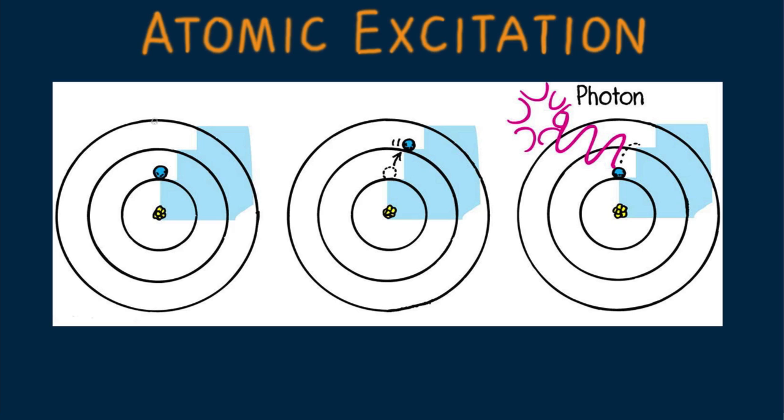An electron farther from the nucleus has a greater electric potential energy with respect to the nucleus than an electron nearer the nucleus. The more distant electron is in a higher energy state, or equivalently, at a higher energy level.